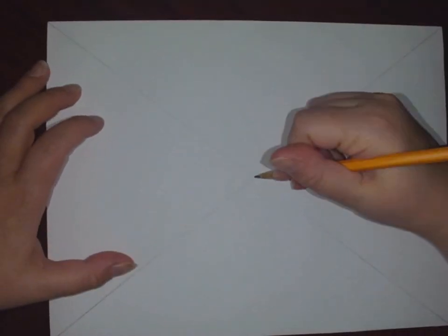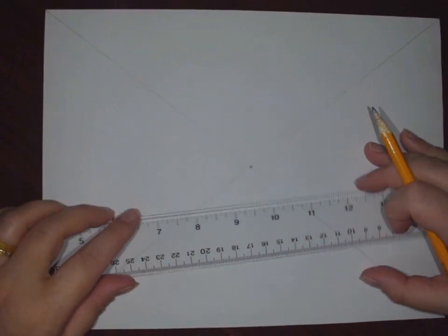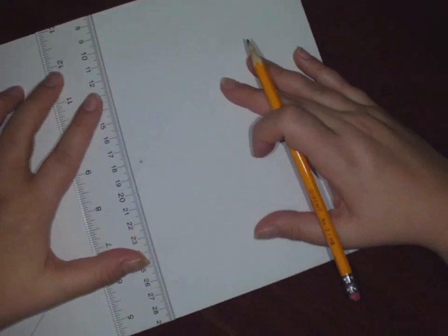So now we have the center. We know where the center is, it's right here. What we're going to do is create the back wall of our room. So it's the very first step. I'm going to take my ruler and I am going to create a rectangle.